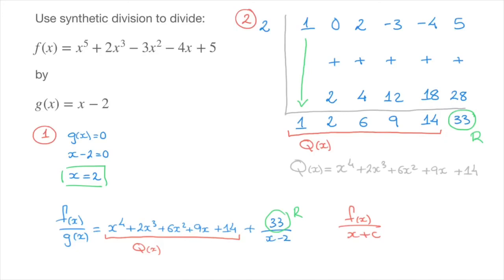The x coefficient must equal 1. If it's not equal to 1, we'll need to add a step to the method — we learn that in the next tutorial. For now, we've covered all the basics needed to carry out synthetic division. If you want to work through another example, stay to see example two.